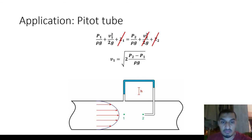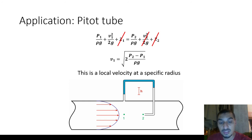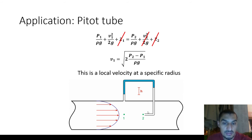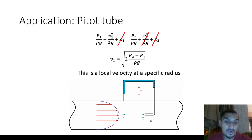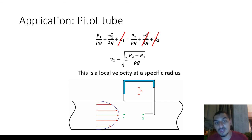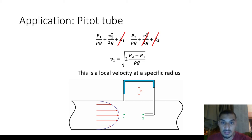There is one drawback to this method: you're getting a local velocity, not the average velocity in the pipe. If you move the Pitot tube to a different radial position, the velocity will be different, because fluid mechanics tells us the velocity profile is parabolic. The velocity varies across the radius, so what you calculate is a local velocity. To get the flow rate, you need to integrate values at different radii.